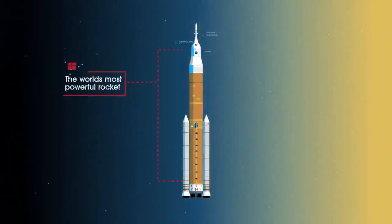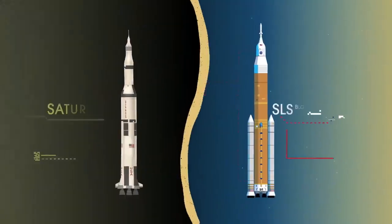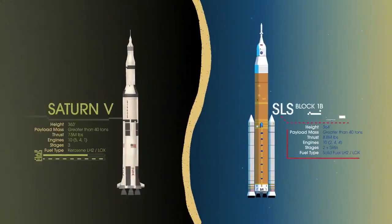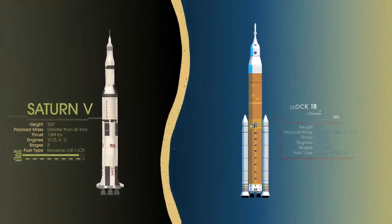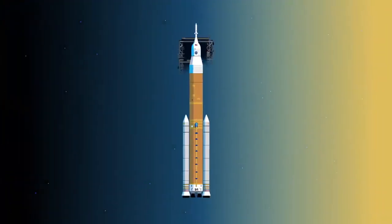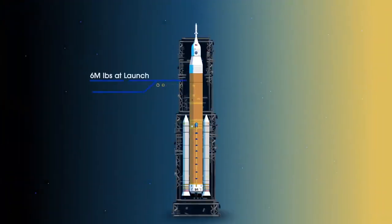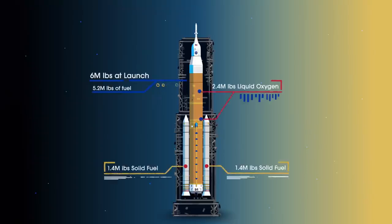Altogether, this is the world's most powerful rocket, and it exceeds the legendary Saturn V of the Apollo era in numerous ways. Sitting on the launch pad, the entire rocket, fully fueled, weighs just over 6 million pounds, 5.2 million of which is just the fuel.